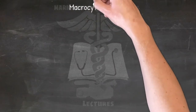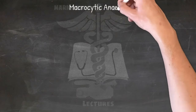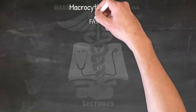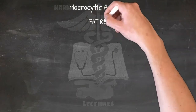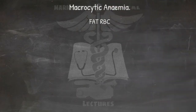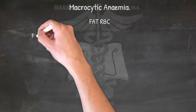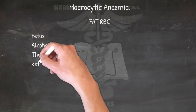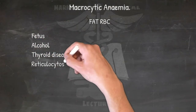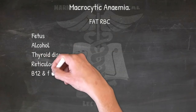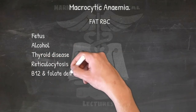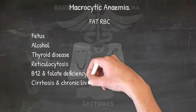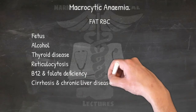Differential of macrocytic anemia: FAT RBC — Fetus (pregnancy), Alcohol, Thyroid disease (hypothyroidism), Reticulocytosis, B12 and folate deficiency, and Cirrhosis and chronic liver disease.